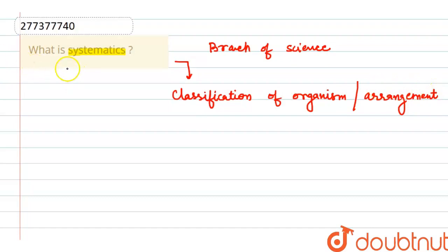Nomenclature also comes under systematics. That means binomial nomenclature, which is a two-word nomenclature system. This is also a part of systematics.